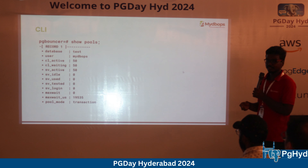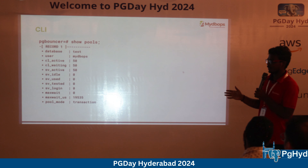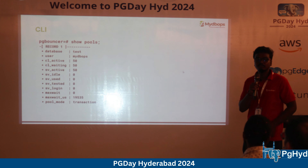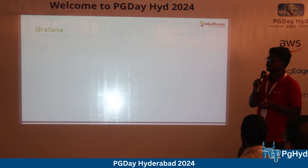Once PG Bouncer is set up, monitoring is critical because it sits between the database and the application. If PG Bouncer goes down, even if the database is running, your application will be down. There are two monitoring options: CLI and Grafana. PG Bouncer has a built-in CLI accessible via PSQL by connecting to the 'pgbouncer' database name, which logs into the PG Bouncer admin console instead of PostgreSQL.